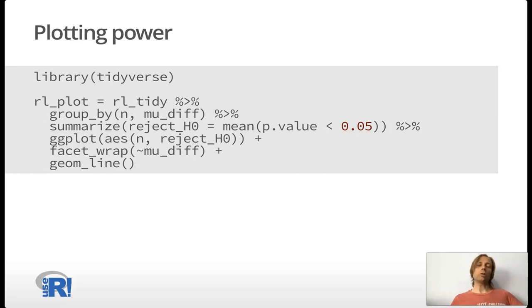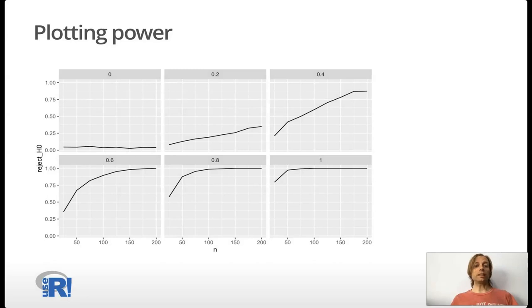Here I load the tidyverse or really I'm just using dplyr and ggplot2, and I group by our simulation factors, by our meta parameters. Then I summarize the power and then I feed this into a simple plot. And here we can see power curves increasing by sample size for each of the different conditions of the difference in means. Of course, we're hovering around 0.5 for the difference of means of 0 and have steeper and steeper curves for bigger and bigger differences in means.